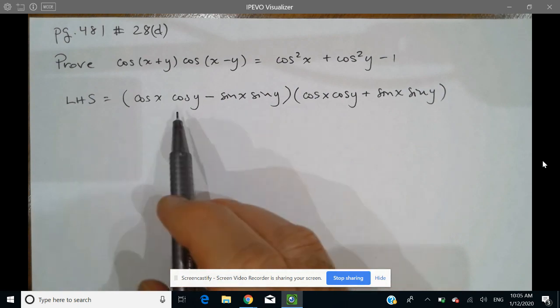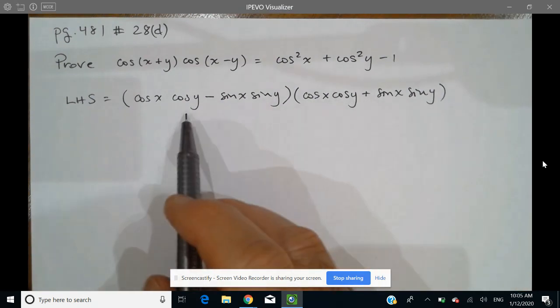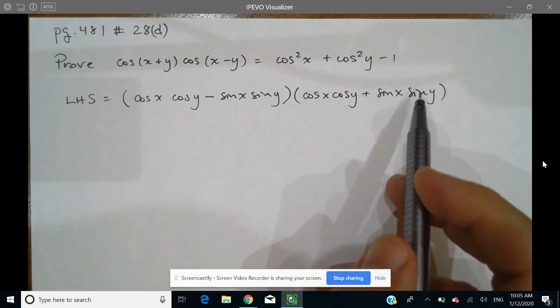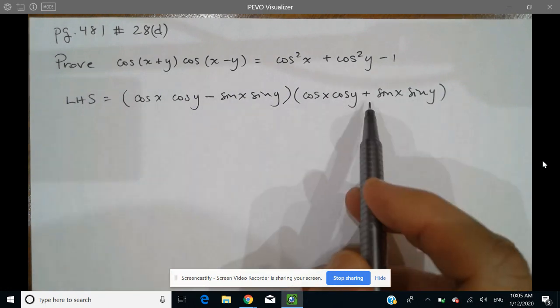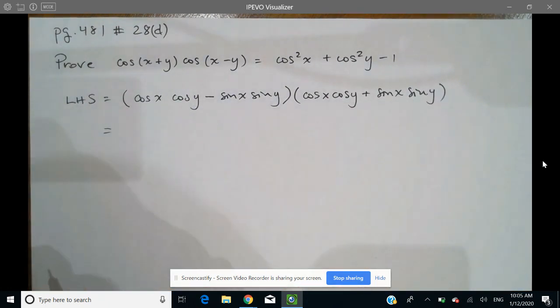But what's nice about it is I notice that this is going to produce a difference of squares because it's the exact same terms, just with the subtraction addition. We know that produces a difference of squares.